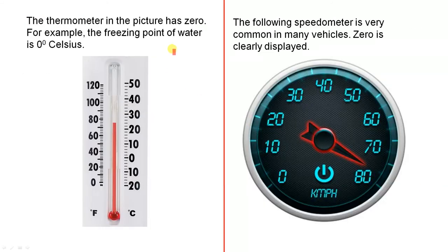The thermometer in the picture has 0. There it is there, for example, and also there. So these are two different scales. Depending on what country you live in, one scale is more popular than the other. For example, the freezing point of water is 0 degrees Celsius.